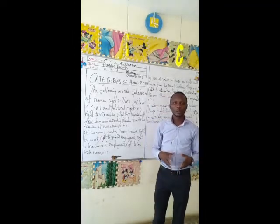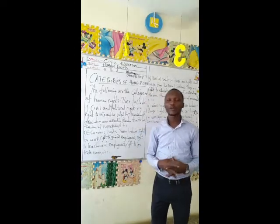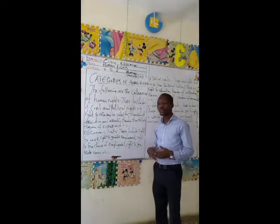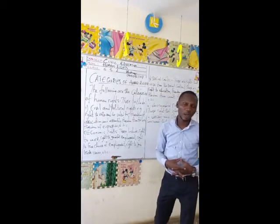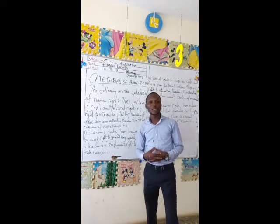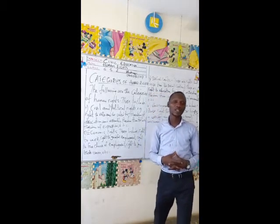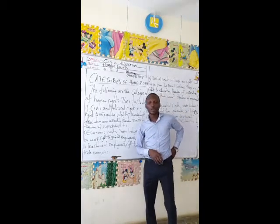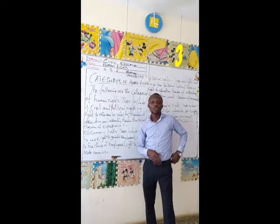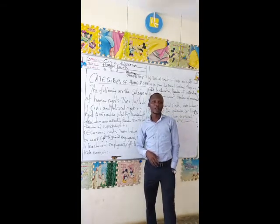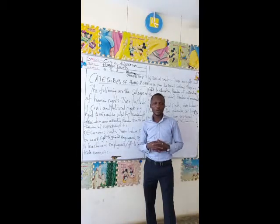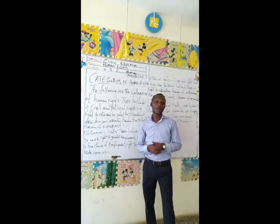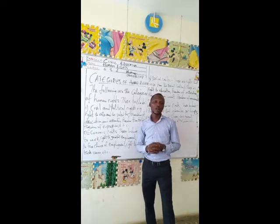We talked about the concept of human rights, the fundamental human rights. We also looked at the genesis of fundamental human rights. I told you exactly what happened on December 10, 1948, where a group of 18 countries came together under the umbrella of the United Nations to ratify and declare the Universal Declaration of Human Rights. And ever since that time, human rights has been one important aspect of human life in the entire world.